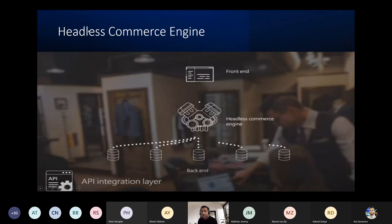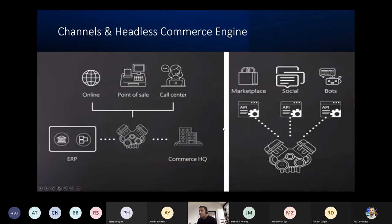From the frontend — e-commerce or any point-of-sale — everything connects to the backend via API connections. All retail channels connect to the Headless Commerce Engine, which synchronizes to Commerce HQ and the ERP via the cloud scale unit. It also connects to marketplaces, social platforms, and even Dynamics CRM.